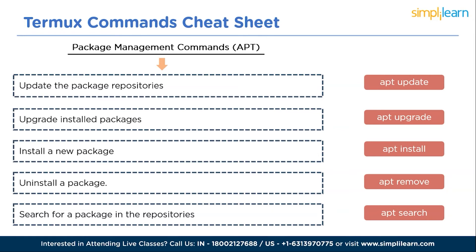You can also enable other repositories on Termux. By default, Termux uses its official repositories, but you might want to explore others to access additional software. Enabling other repositories requires careful consideration as it may expose your system to potentially untrusted sources. To do so, you need to edit the sources.list file in Termux — be cautious, as incorrect modifications may cause issues. You can also add third-party repositories for additional packages.